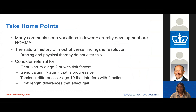Take-home points: most commonly seen lower extremity variations in young children are normal, and the natural history of most findings is resolution. Bracing and physical therapy are not indicated in most of these cases. Consider referral for genu varum over age two with risk factors, genu valgum over age seven that is progressive, torsional differences over age ten interfering with function, and limb length differences affecting gait.